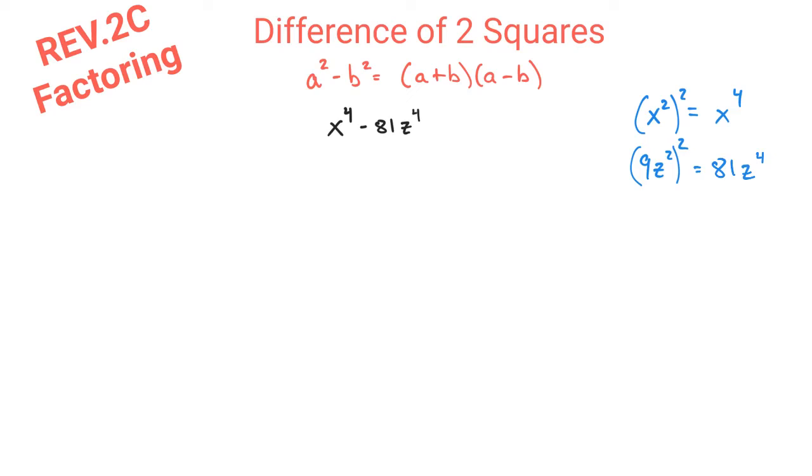Thus, we can factor this using the difference of two squares method, where you're going to have the same first term in both of your parentheses, the same second term, but just going to be opposite. So we have x^2 first in both parentheses, you have a positive and you have a negative, and then you have 9z^2 in both of the second terms of each of our binomials.